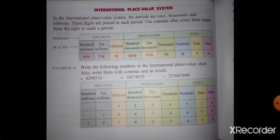We should write the periods and places using commas after every 3 digits from the right to mark a period. So if you are writing commas for a number under the International Place Value System, you should start putting a comma from the extreme right to left — count 3 digits, then put a comma, then again after 3 digits, put another comma.